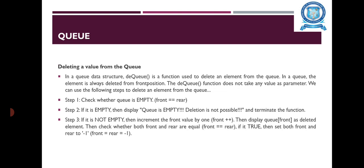For deleting a value from the queue, the DQ function is used. Elements are always deleted from the front position. The DQ function does not take any value as a parameter. Steps: Step one — check whether the queue is empty. If it is empty, then display 'Queue is empty, deletion is not possible.' If it is not empty, then increment the front value by one, then display queue[front] as the deleted element. Then check if both front and rear are equal; if true, set both front and rear to minus one.